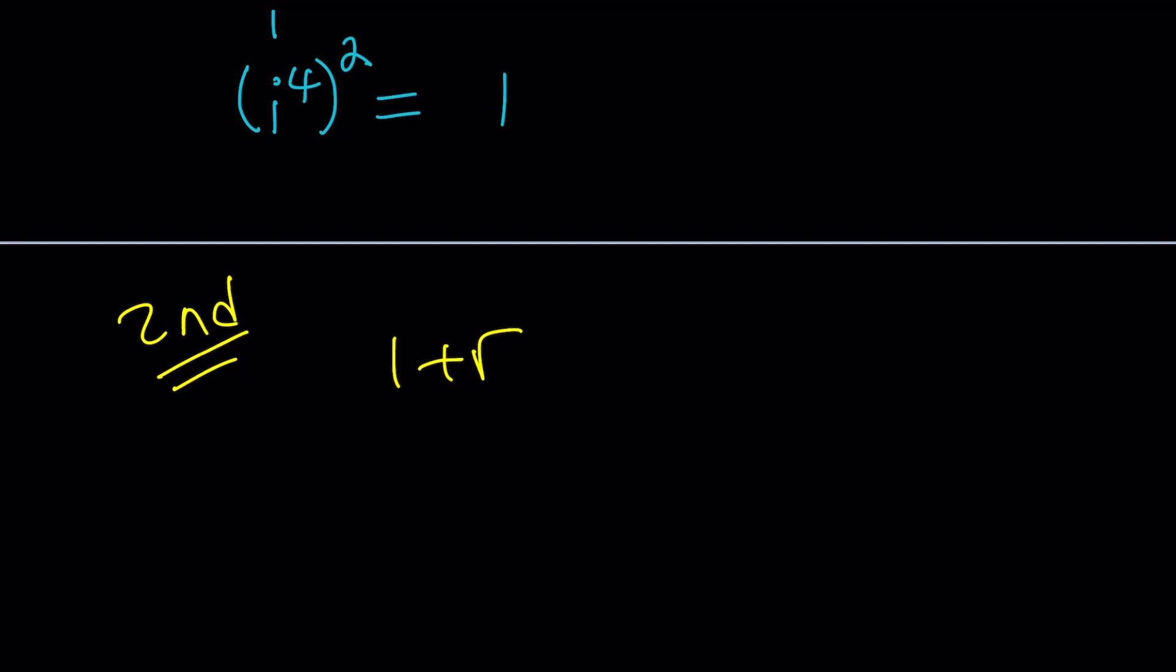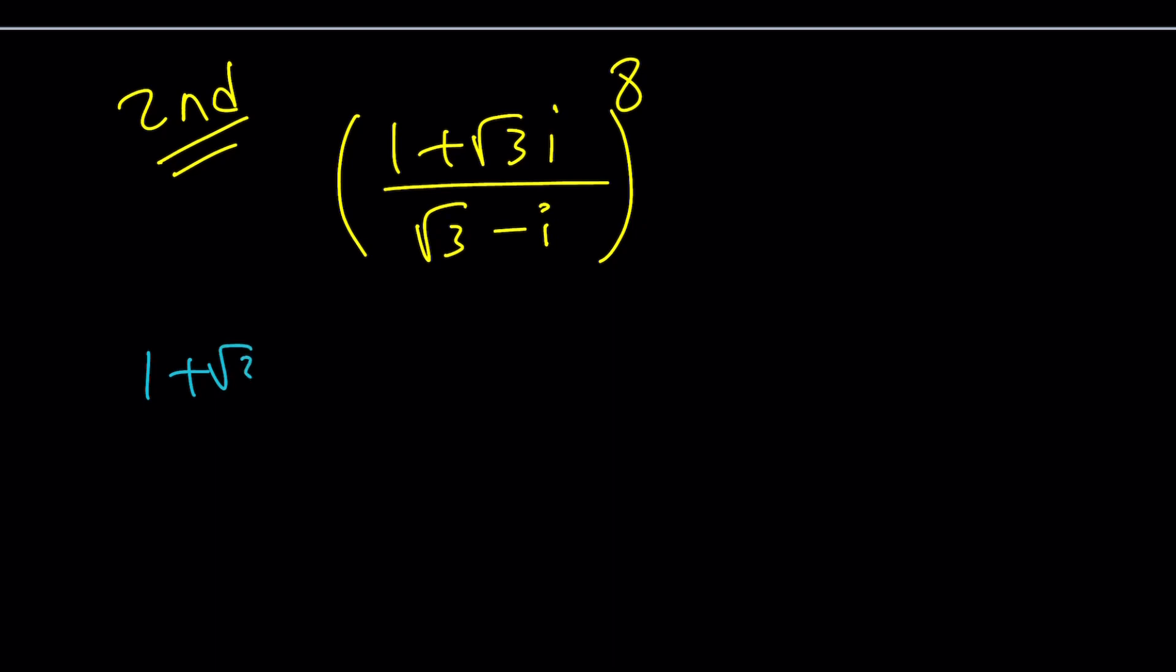So for my second method, since I'm trying to raise something to the 8th power, before I raise it to the 8th power, I'd like to simplify inside the parentheses. So let's go ahead and simplify this first: (1 + √3i) / (√3 - i). How do you simplify? How do you divide complex numbers? So we multiply by the conjugate.